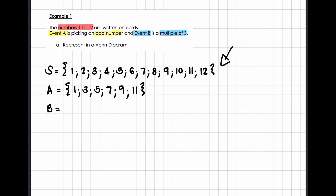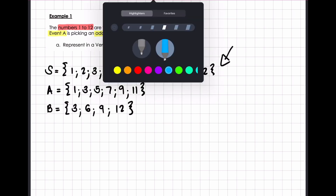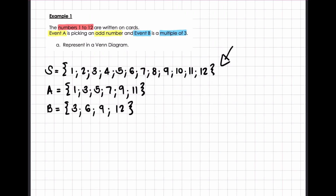And then event B is picking a multiple of 3. So the multiples of 3 — remember the difference between factors and multiples — multiples are 3, 6, 9 and 12 within the sample space. Now what you can notice is that there are going to be numbers that aren't being used, so I would suggest that we just lightly cross out the values as we go. The first thing we need to do is decide whether there's an intersection between these events, event A and event B.